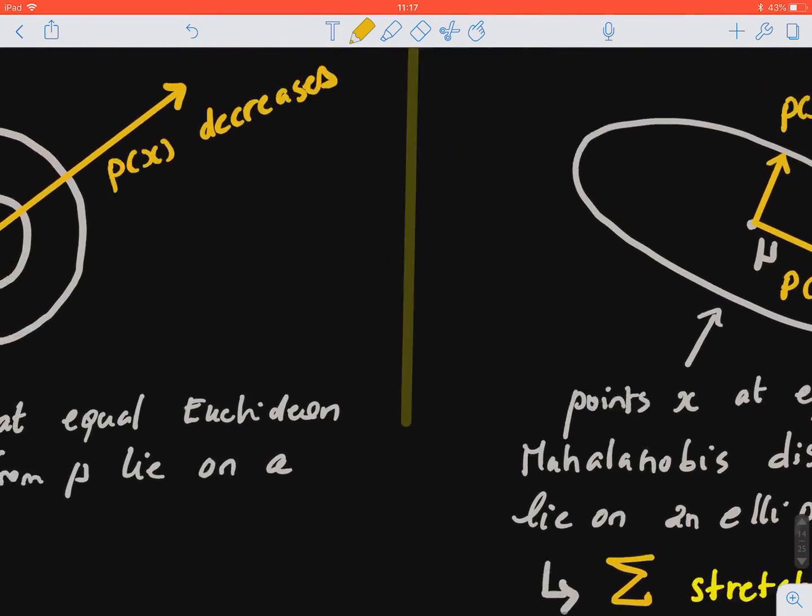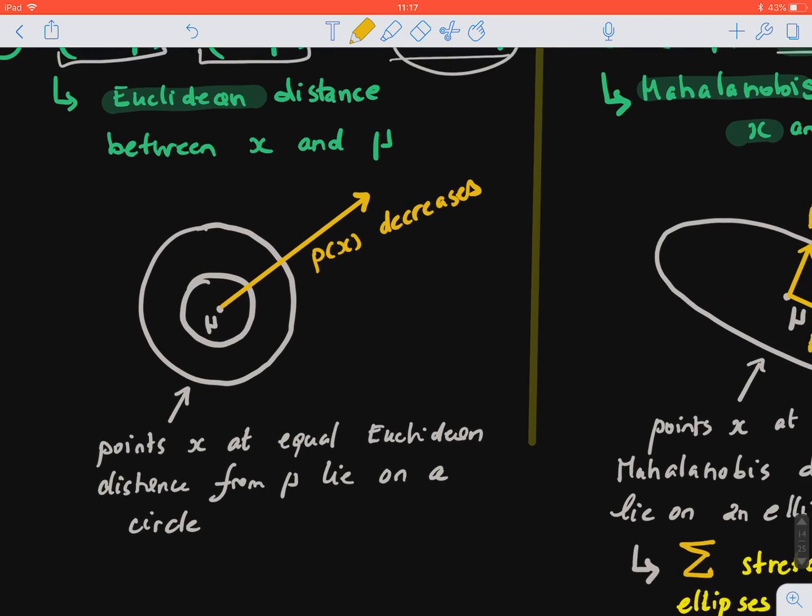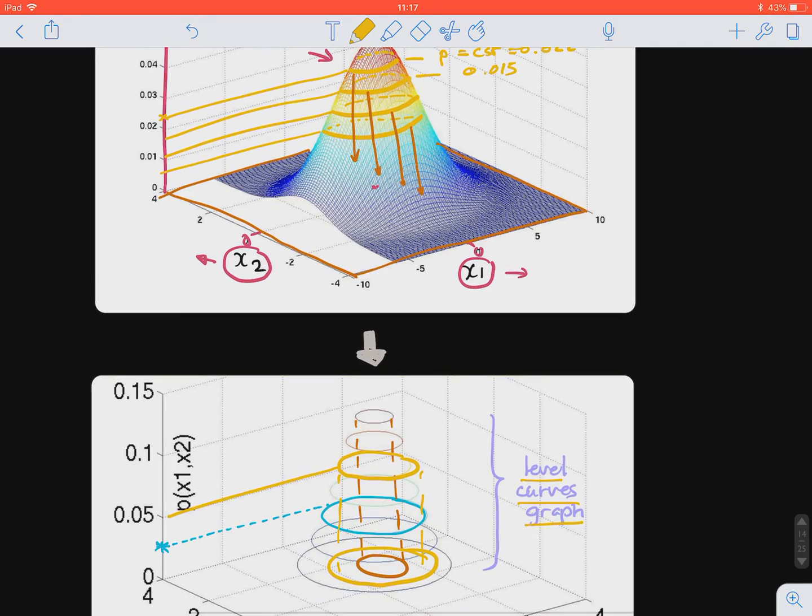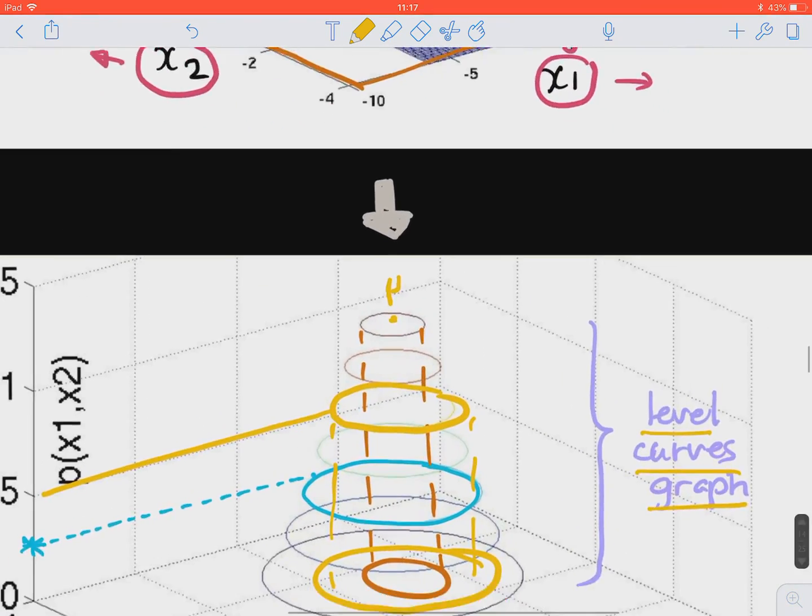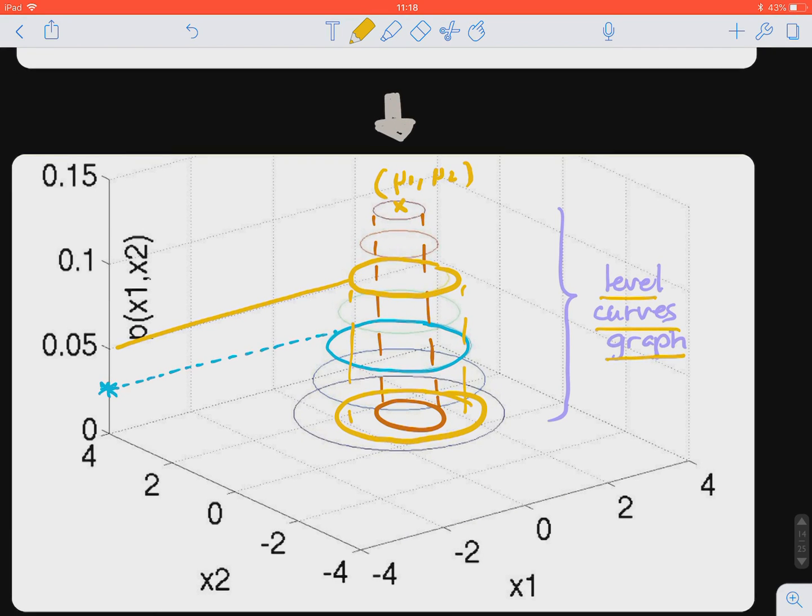So in the case of the Euclidean distance, we notice that all of those are centered at the mean. So the center of these nice circles is the average for x₁ and average for x₂. So that's the coordinate of the center, or the mean.